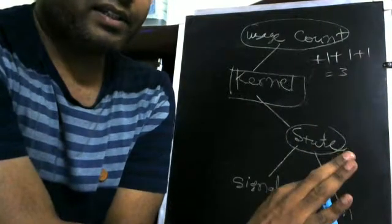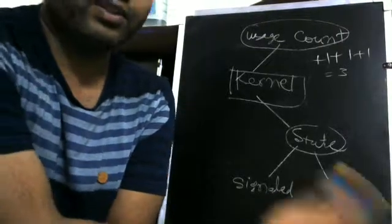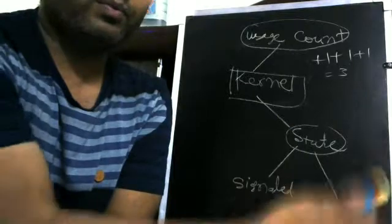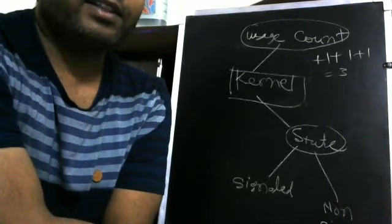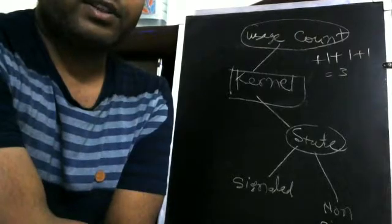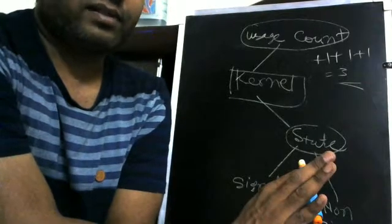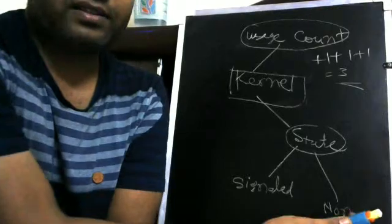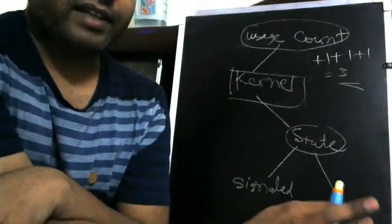There are various APIs using which you can create kernel objects. Once you create a kernel object or use the same one already in use by another program, the uses count for your process is increased. For example, if you have three apps - app1, app2, app3 - all using the same kernel object such as a mutex, the uses count will be three.